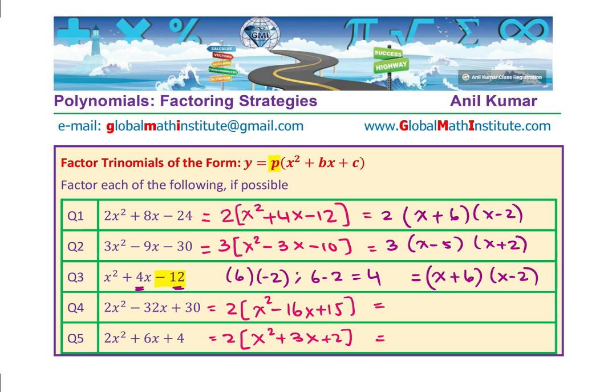The next one here will be 2 times what? It is 2 times. We need 15, but positive, and the sum is minus 16. That means both the numbers should be negative. x minus 1 and x minus 15 will do the trick. Here we need 2, and 2 you can get by multiplying 2 times 1 and 3. You could do this as x plus 2 times x plus 1.